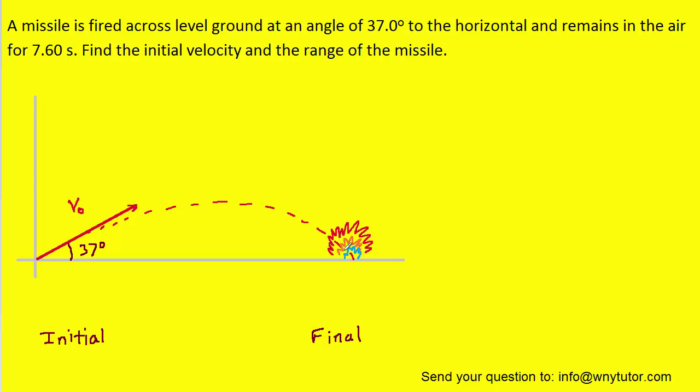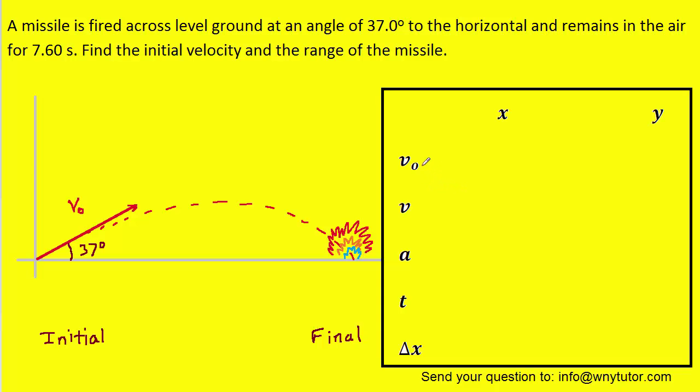And what we want to do next, after drawing the picture, is consider a projectile motion table that will help us summarize the information. Now in this table, of course, we have the initial velocity, the final velocity, acceleration, time, and displacement. And the key idea to solving this and all other projectile motion questions is to break the information into both an x and a y direction.